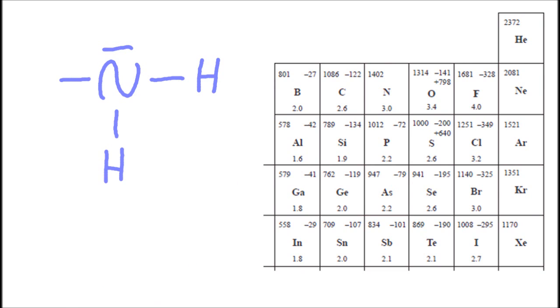Ammonia, NH3, there are three bonds there. Nitrogen has an electronegativity of three, which is greater than hydrogen. So the electrons in the bonds are going to move towards the nitrogen. I'm not sure about the lone pair, but I think that probably does too.